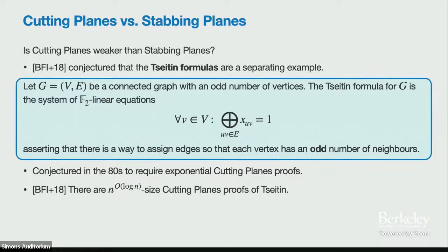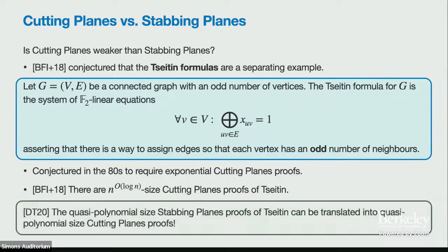In our 2018 paper, we showed there are quasi-polynomial size stabbing planes proofs of Tseitin. This seemed like a good separating example. However, in 2020, Detchkov and Tiwari showed that these quasi-polynomial size stabbing planes proofs of Tseitin can be translated into quasi-polynomial size cutting planes proofs — refuting the longstanding conjecture.